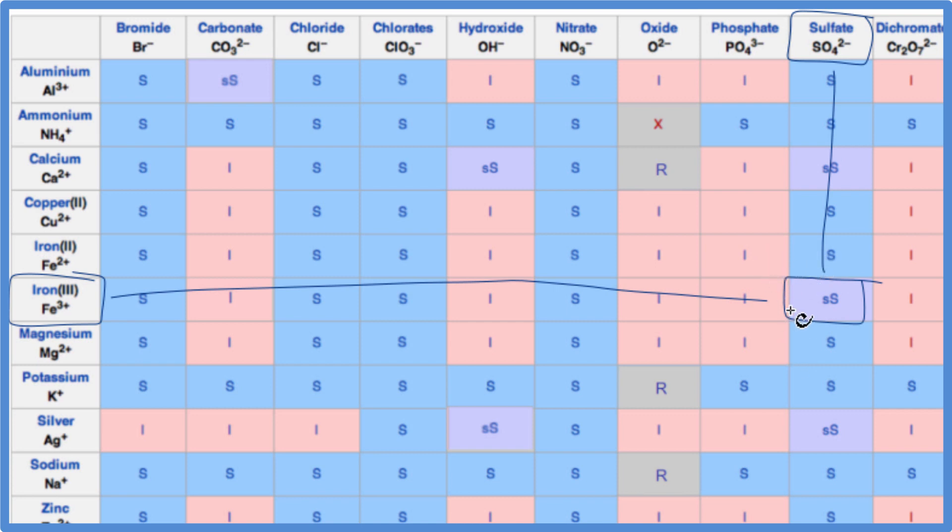That means it's slightly soluble. Only a little bit of it will dissolve. For net ionic equations, we consider this to be a solid, because only a little dissolves. Most of it's sitting in the bottom of the test tube.